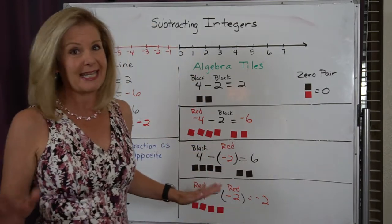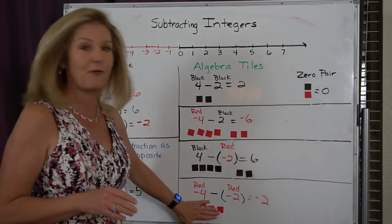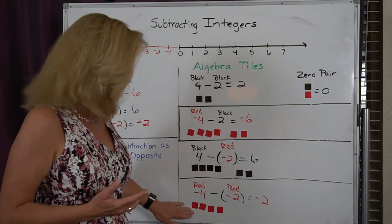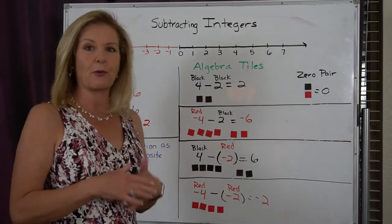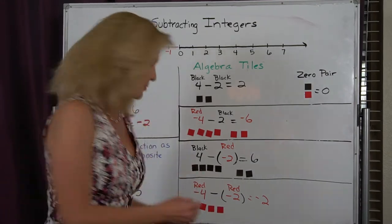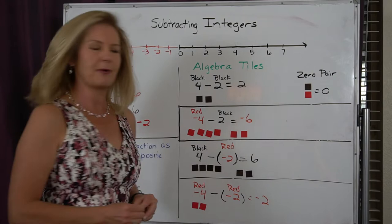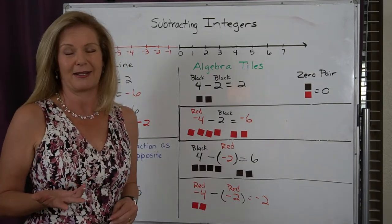The last model is the easy one, because I have four negatives — negative 4 — so there are four red tiles, and I've got to take away two of those reds. I take away the two reds, and I can see my answer is negative 2.